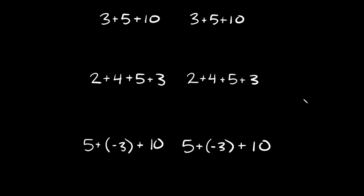What's up, you freaking geniuses! In this video I'm going to teach you about the associative property of addition and multiplication. Basically, the associative property just says that if you're adding or multiplying numbers together, the way you group them doesn't matter.